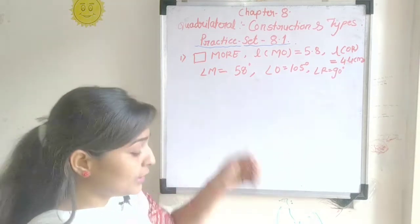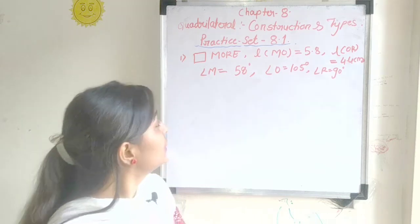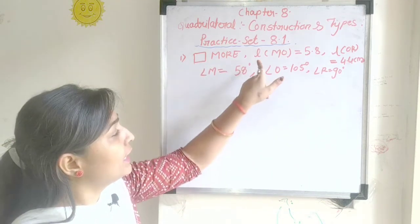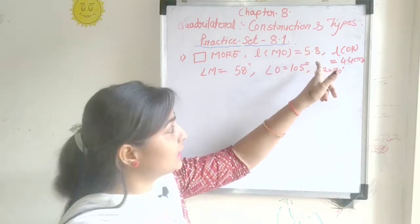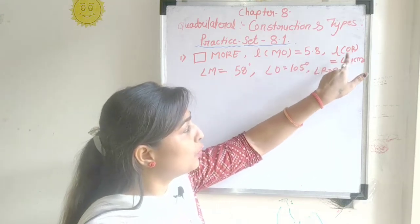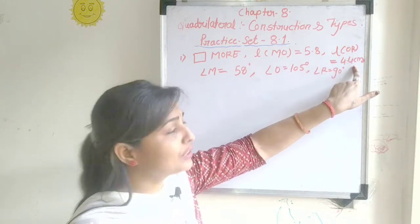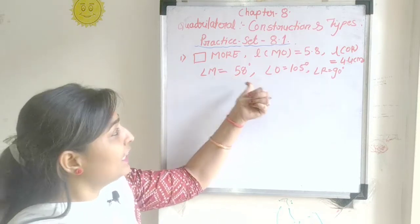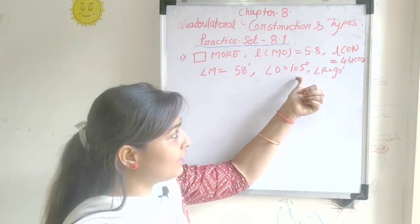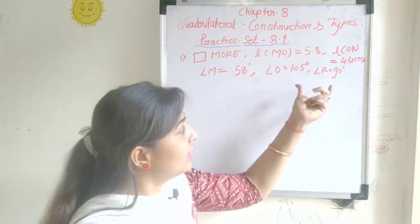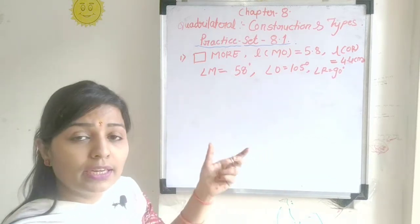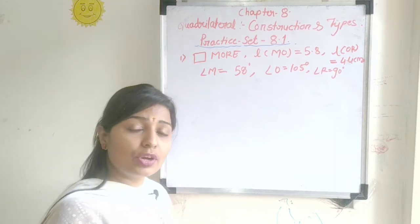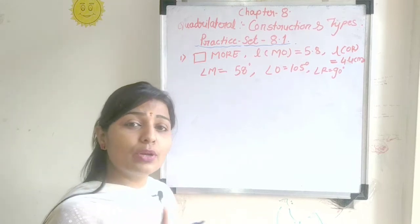First question: construct the following quadrilateral MORE. The length MO is 5.8 cm, the length OR is 4.4 cm, the angle M is 58 degrees, the angle O is 105 degrees, and the angle R is 90 degrees. Let's write the rough diagram using this information.